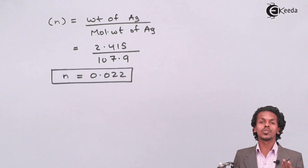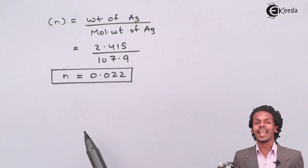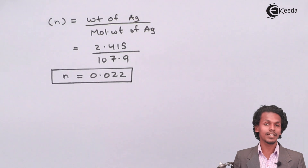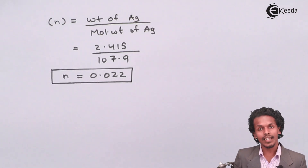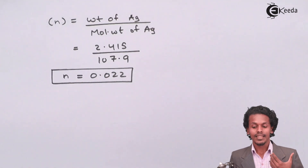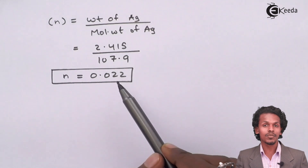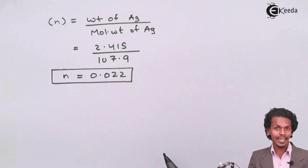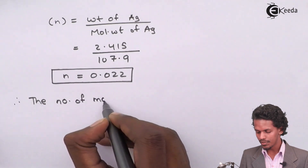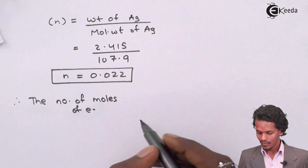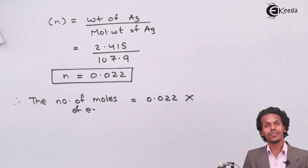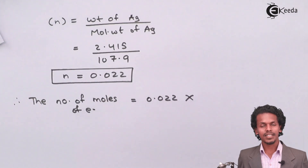Now we calculate the number of moles of electrons. Since one silver atom loses 1 electron when deposited, if we have 0.022 moles of Ag, then 0.022 moles of electrons are involved. One mole of electrons corresponds to 96500 coulombs.